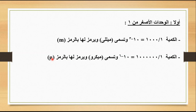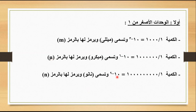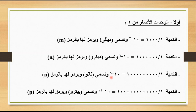بعد كده عندي 10 أس سالب 9، وتُسمى نانو ويُرمز لها بـ n. ولما نيجي نشوف الأصفار الموجودة نلاقيها واحد اتنين تلاتة لغاية سالب تسعة. وتُسمى النانو. بعد كده في عندي البيكو، وده 10 أس سالب 12، ويُرمز لها بالرمز p. احنا وقفنا هنا لغاية 10 أس سالب 12، وكل القيم دي بالسالب أي الوحدات الأصغر من واحد.